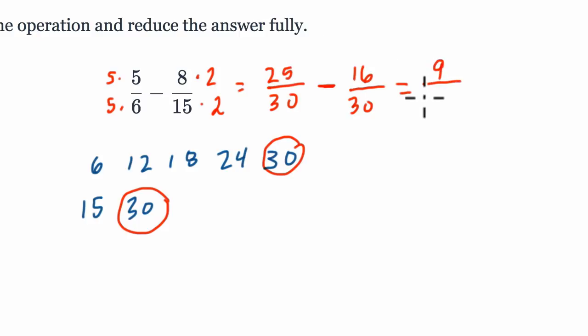In this case, 9 over 30 would be our answer, but we have to reduce. So we look at 9 and 30 and say what's a factor that goes into both 9 and 30, and that's 3.